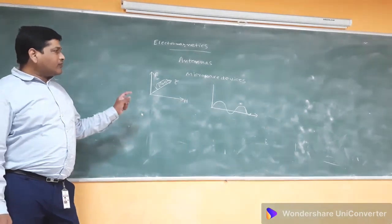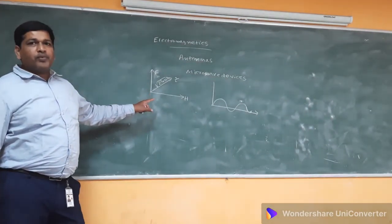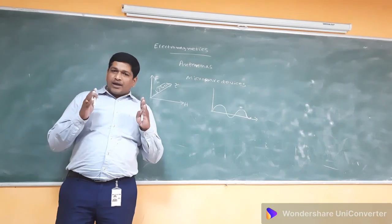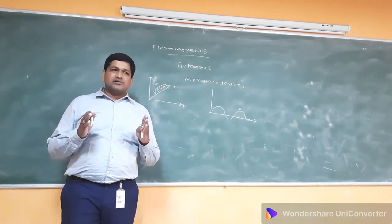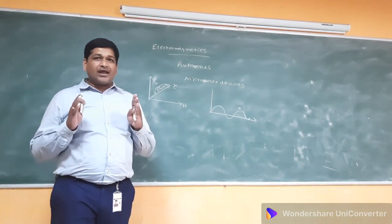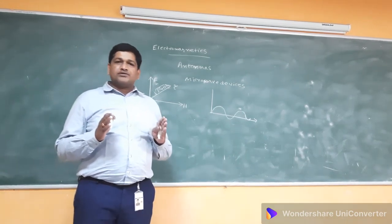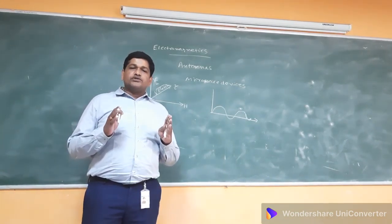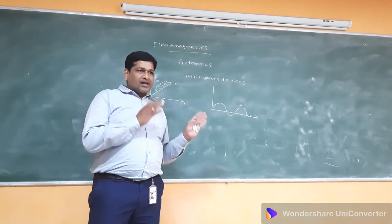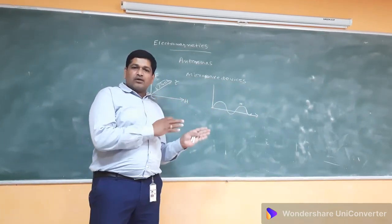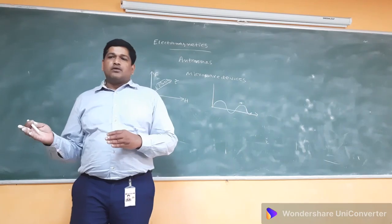Whatever it may be, the electromagnetic signals are made to propagate to an antenna structure. Antennas are metallic structures used for the transition of electromagnetic signals from one medium to another.